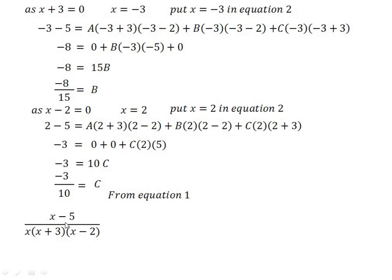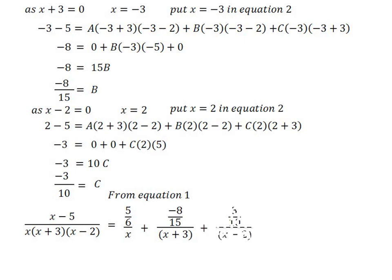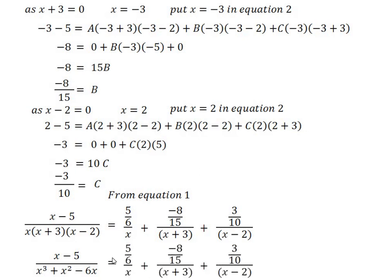Substituting the values of A, B, and C into equation number 1: (x - 5) divided by x(x + 3)(x - 2) equals (5/6)/x plus (minus 8/15)/(x + 3) plus (minus 3/10)/(x - 2). This is our final answer for the partial fraction expansion.